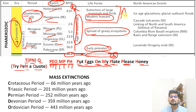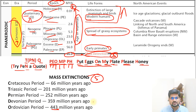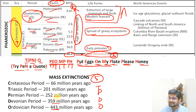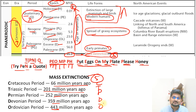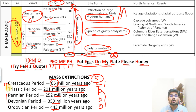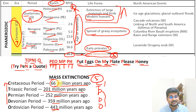Across the Phanerozoic eon there were five major mass extinctions, remembered as ODP-TC: Ordovician (~443 MYA), Devonian (~359 MYA), Permian (~252 MYA), Triassic (~200 MYA), and Cretaceous (~66 MYA). It is now being said that we are entering a sixth mass extinction due to climate change, as large numbers of species are currently being lost.